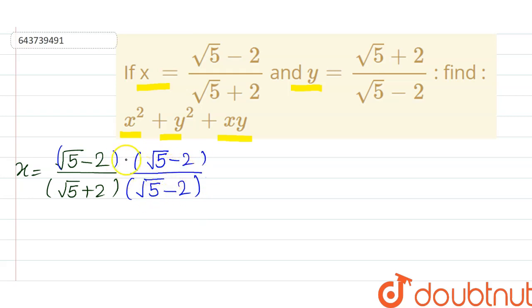Now numerator will be, both brackets are same, so you can apply (a-b)² identity: a² + b² - 2ab. So we are going to write this: square of √5 is 5, plus 4, and minus 4√5.